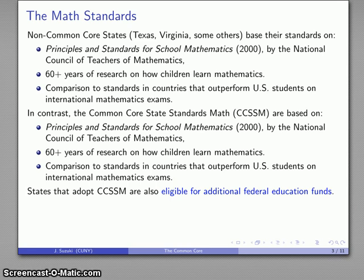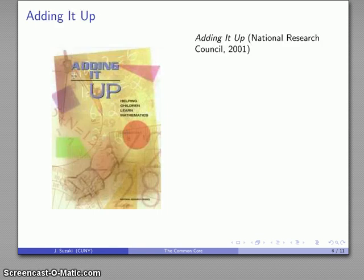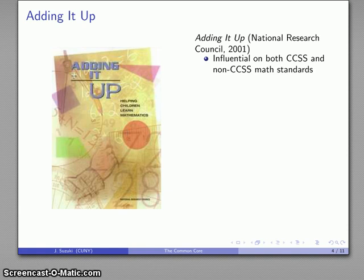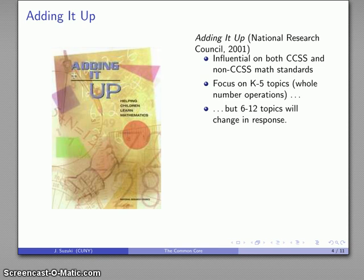Well, so the question is, what are these standards? Independent of whether you're a Common Core or a non-Common Core state, independent of whether your state is going to receive additional federal money for not having to develop its own standards, what are these standards? And a lot of the standards are going to be based on an important document called Adding It Up. This was put together by the National Research Council in 2001. And this document, again, freely available online. This was published by the National Research Council, and you could look it up and download the entire document if you want. This is an influential document for developing both the Common Core state standards and the non-Common Core state standards in mathematics. And the focus on this document is on K-5 topics, whole number operations. However, if you change the K-5 curriculum, you have to change the curriculum in grades 6 through 12 as well.